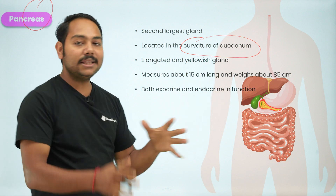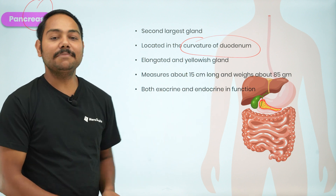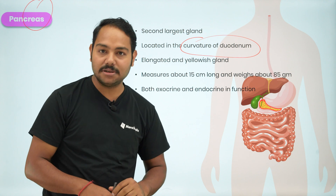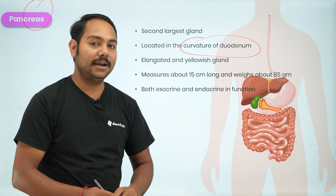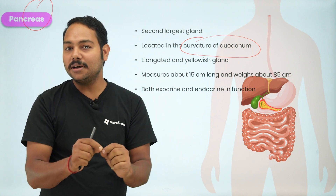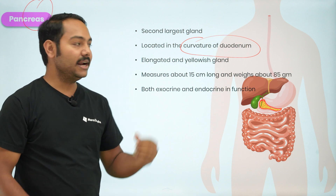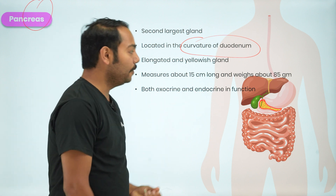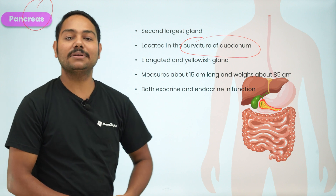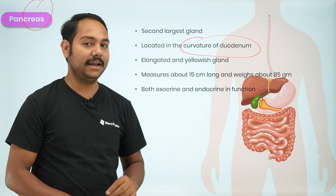This is a gland. It measures about 15 cm long. It has both exocrine and endocrine functions.